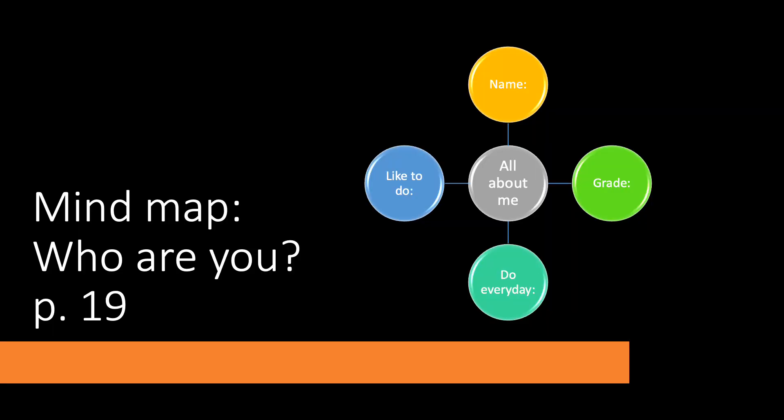On your own. All about me. What is your name? What is your grade? What do you like to do? What do you do every day? Mind map. On page 19 in your book. Fill in the blanks.